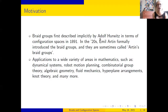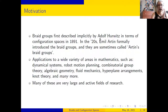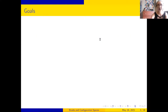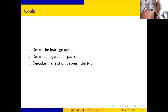I looked into a couple of these for my thesis research, although I can't say I could explain every word that's up on the slide right now. I'll talk a little bit about the most exciting one, which is robot motion planning, at the end. So we're going to start out by talking about what braid groups are and trying to get a feel for that. We'll define the braid groups, we'll define configuration spaces, and then I'm going to describe the relationships between the two.